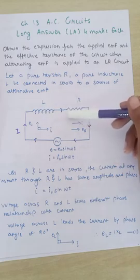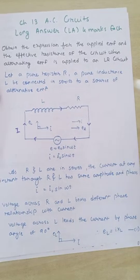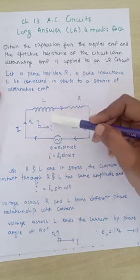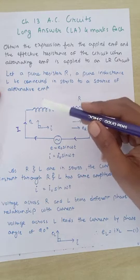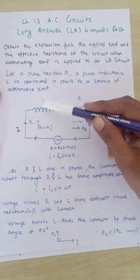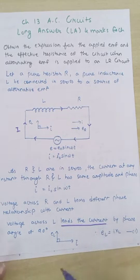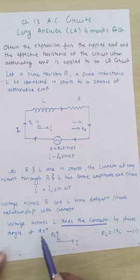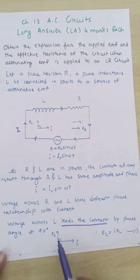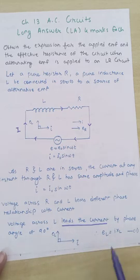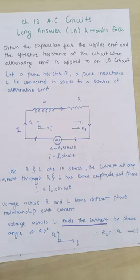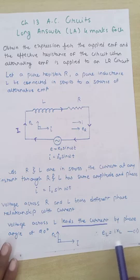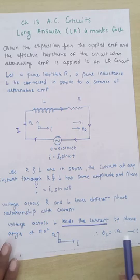The voltage across the two elements will differ by some phase relation. The voltage across the resistor is in phase with the current, while the voltage across the inductor leads the current by a phase difference of 90 degrees (π/2). Voltage across the inductor is shown upward, with current along the x-axis. By an Ohm's-law-like relation, voltage across the inductor is given by I·XL, where XL is the inductive reactance.